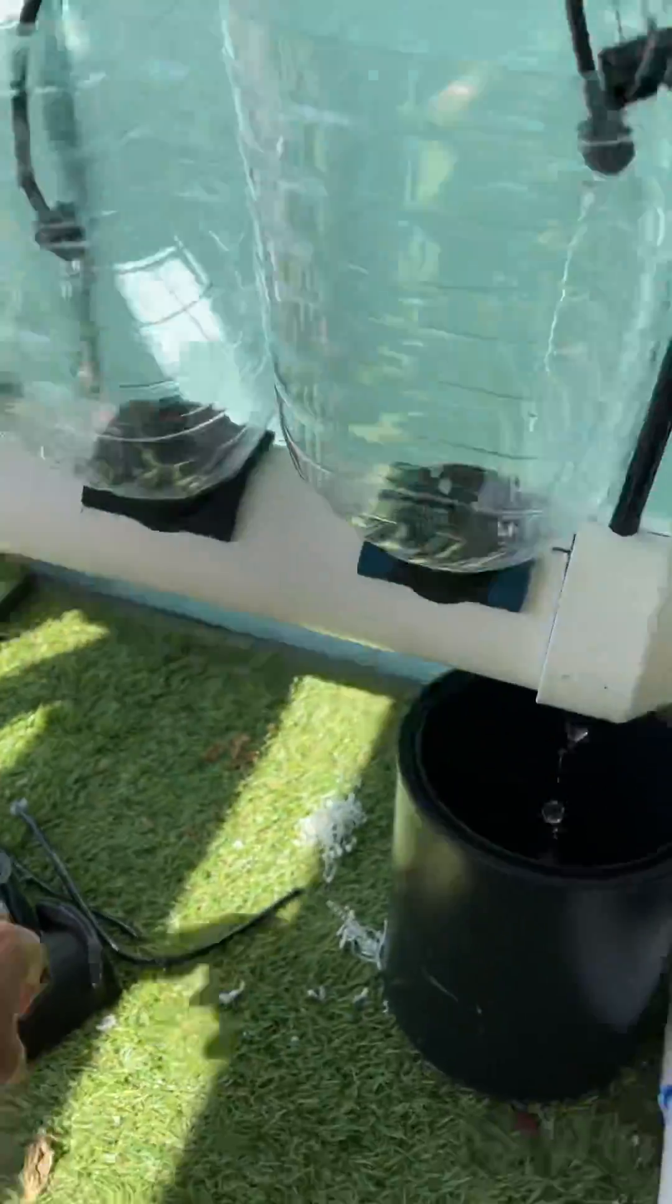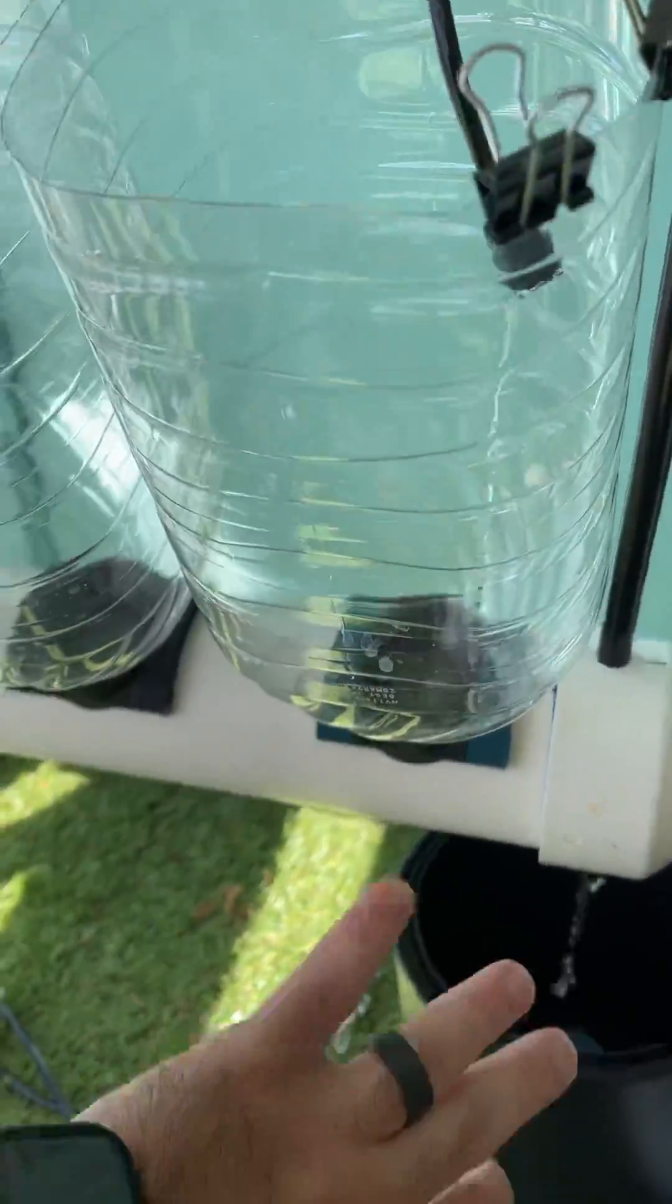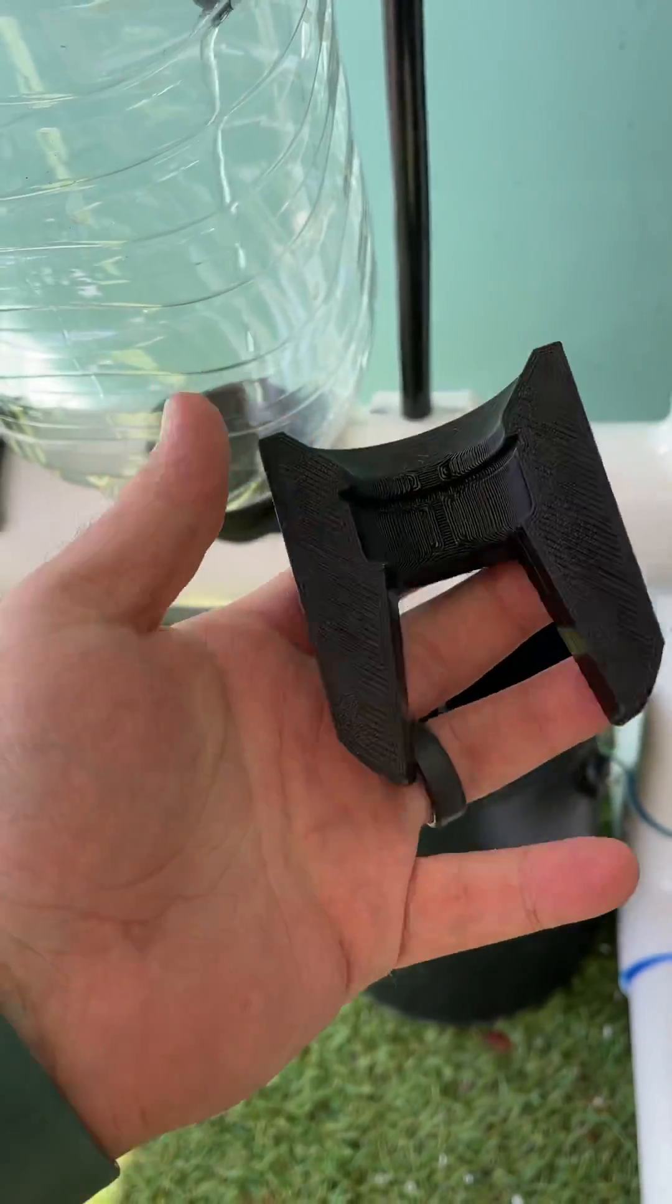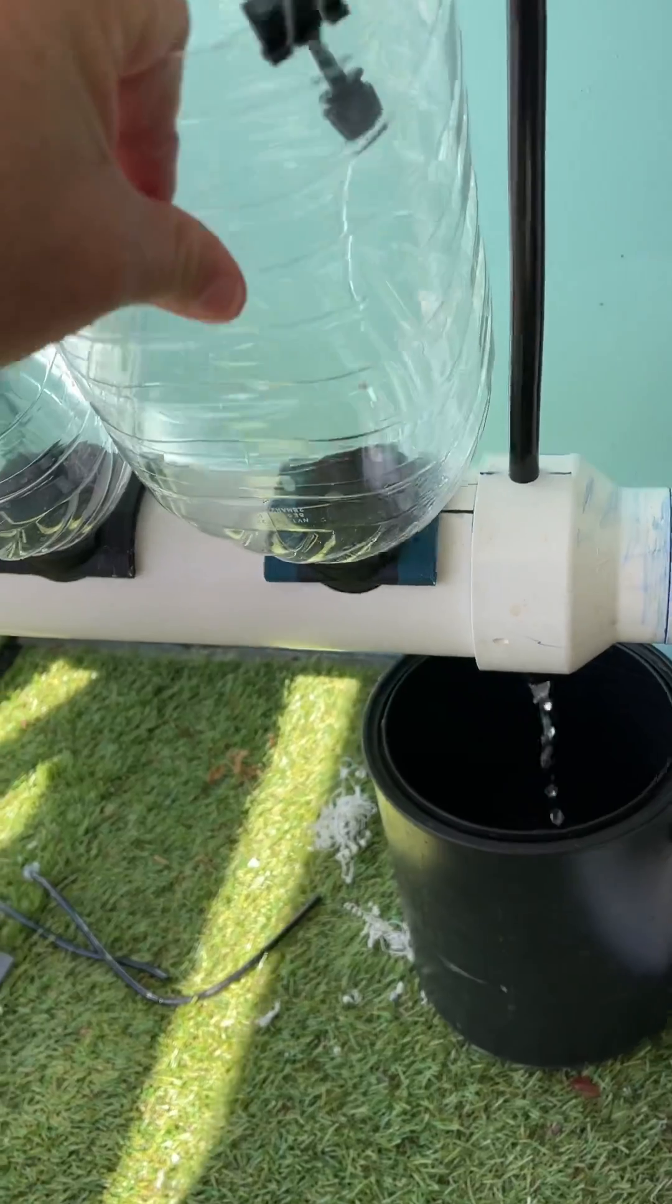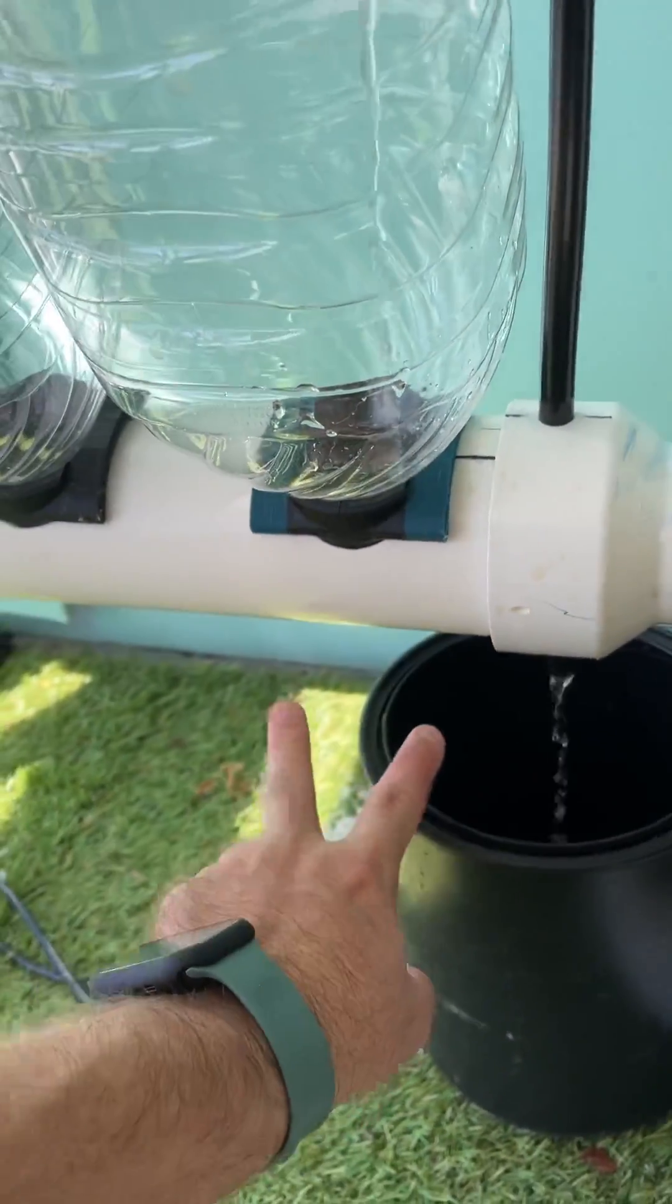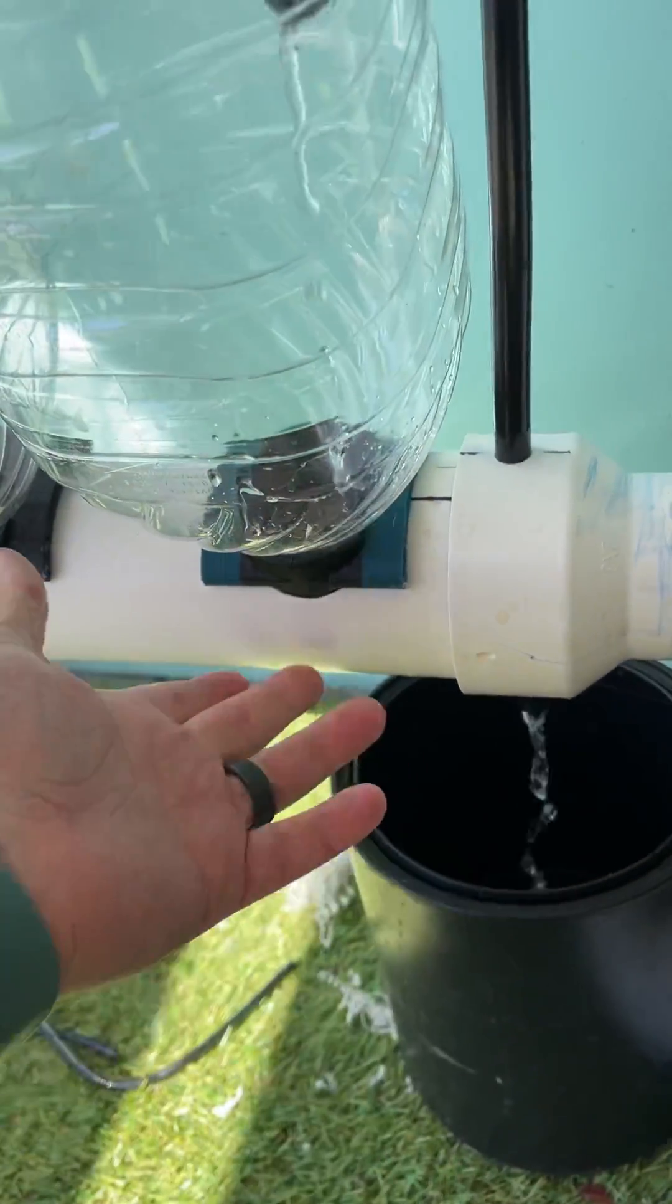Each of these bottles is held in with this piece right here which grabs the lip of the bottle so that it can't come out. They are firmly affixed, and then we have the option to put zip ties around the bottom here if we really need to hold them in for whatever reason, if we have a lot of heat or whatnot.